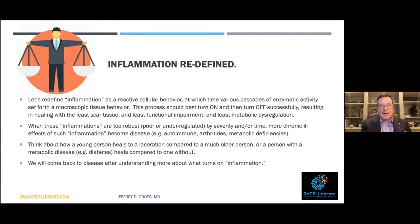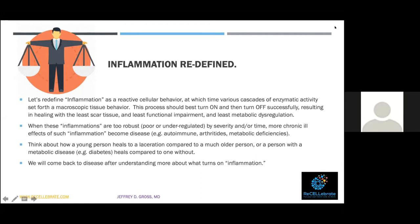If these inflammations are too robust or poorly regulated by severity and/or time, we have consequences such as autoimmune problems, arthritides, metabolic deficiencies — these are diseases. If we understand inflammation in better detail we will understand disease in better detail. Think about how a young person heals a laceration versus an elderly person — the child's abrasion heals in days while the elder's may take much longer. We need to learn why that occurs so we can help our patients.